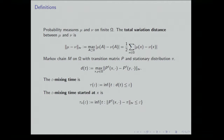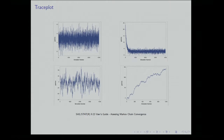Coming back to convergence diagnostics — a very common one is the trace plot. You look at some particular dimension of your Markov chain configuration, plot iteration number on the x-axis against the value at each iteration. If you go to statistical analysis software user guides for assessing Markov chain convergence, they show pictures where if the mean seems fairly constant and variance is consistent around the mean, that's a good sign.